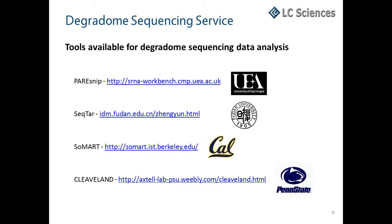There are several bioinformatic tools available for degradome sequencing data analysis: PERSNP, developed at the University of East Anglia; SICTAR, developed at Fudan University; SOMART, from the University of California, Berkeley; and CleaveLand, developed at Penn State University.